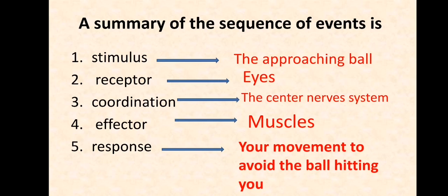The effector is the muscles, and the response is your movement to avoid the ball hitting you. To recap: a stimulus is a change in the surroundings of an organism that produces a response.